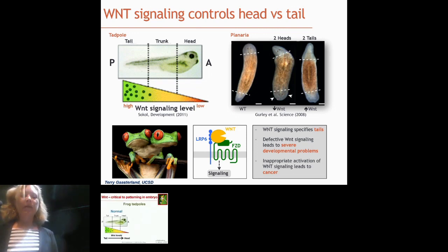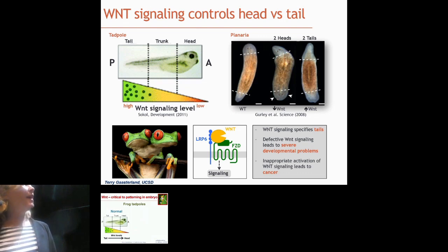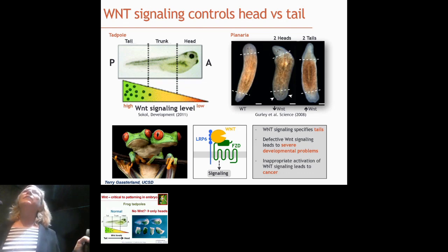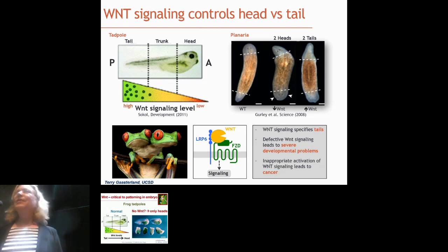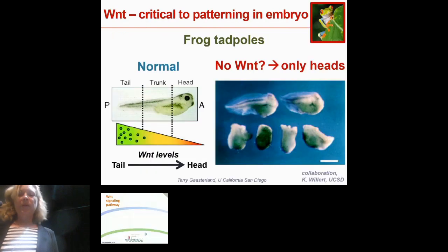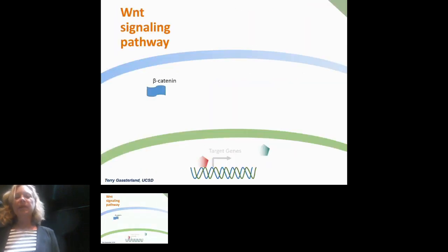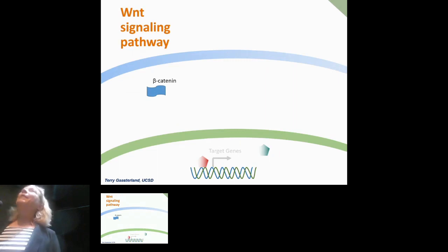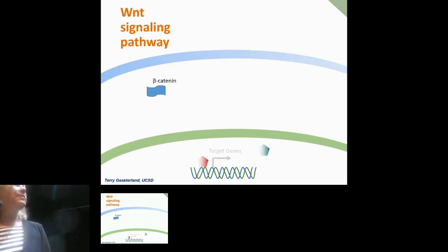Wnt signaling specifies tails, and defective Wnt signaling leads to severe developmental effects. If we completely wipe out Wnt, all we get are tadpoles with only heads — a very extreme effect. So how does this Wnt signaling pathway work? A key player in all of this is beta-catenin, which is intracellular, outside the nucleus but inside the cell.